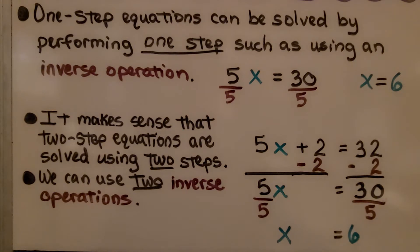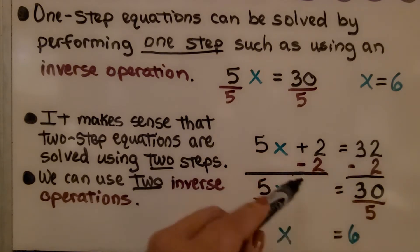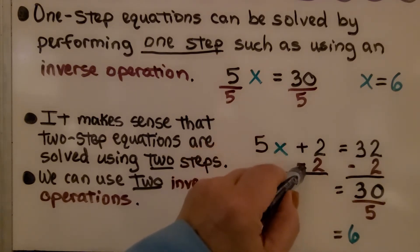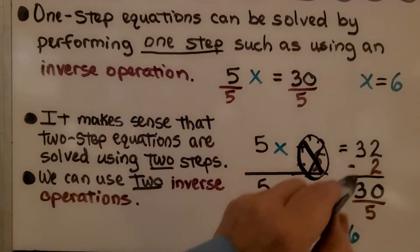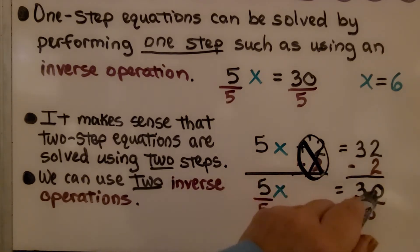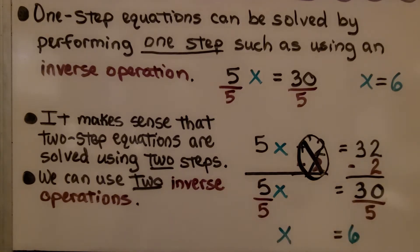It makes sense that two-step equations are solved using two steps — we can use two inverse operations. If we have 5x plus 2 is equal to 32, we can start by creating a zero pair. We have a plus 2, so we do a minus 2. That gets rid of the plus 2, and on this side we get 30. Now we have 5x is equal to 30. Our second inverse operation would be dividing both sides by 5. We get x is equal to 6.